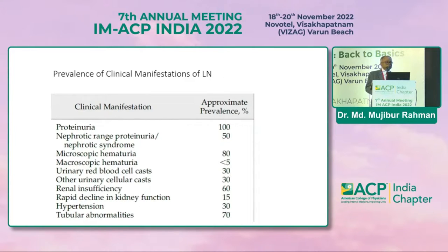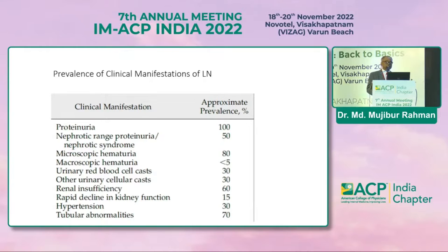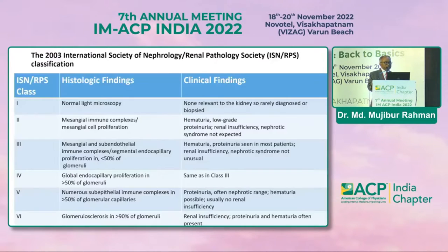You all know the clinical features: proteinuria, nephrotic range proteinuria, microscopic hematuria, all leading to edema, hypertension, and lipid abnormalities. These are some important clinical features of lupus nephritis.